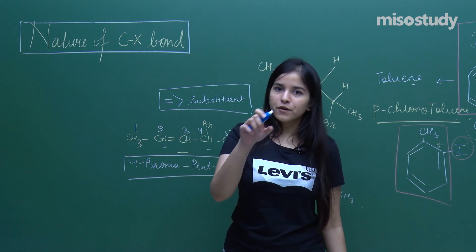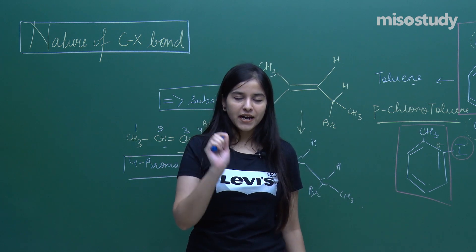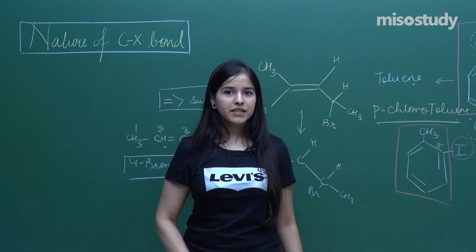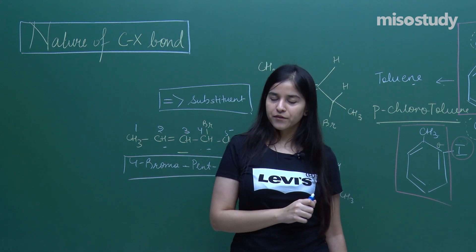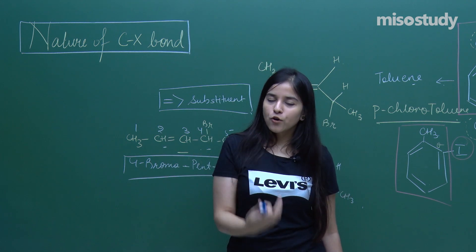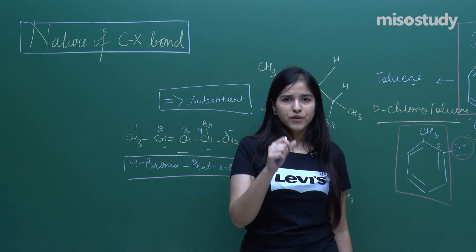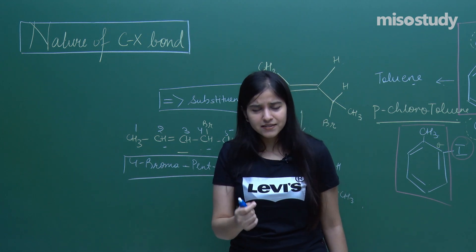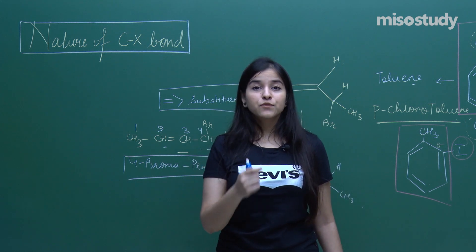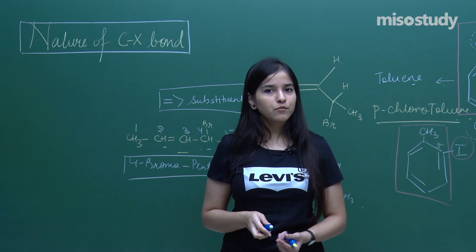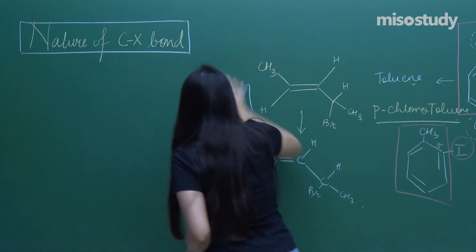Now we are through with the nomenclature. Nomenclature is such a vast thing that if we go on discussing examples it could take many classes. I have just picked up a few examples to give you an idea of what would be the approach in each one of them, be it aromatic or just the simple aliphatic ones. You need to practice a lot more questions related to IUPAC nomenclature. We are also going to discuss some questions in the exercises. So now let's move on to the main topic we have to discuss today.